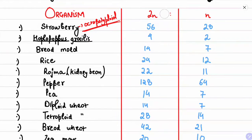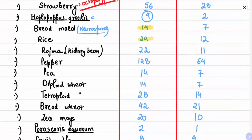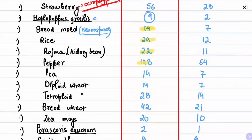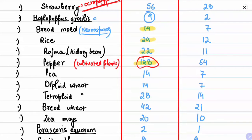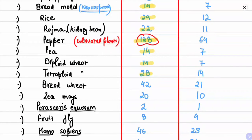Haplopapus gracilis has chromosome number 4. Bread mold, Neurospora crassa, has somatic chromosome number 14. Rice has 24. Rajma has 22 — also an important plant. Pepper has 128, which is the highest chromosome number among cultivated plant species.